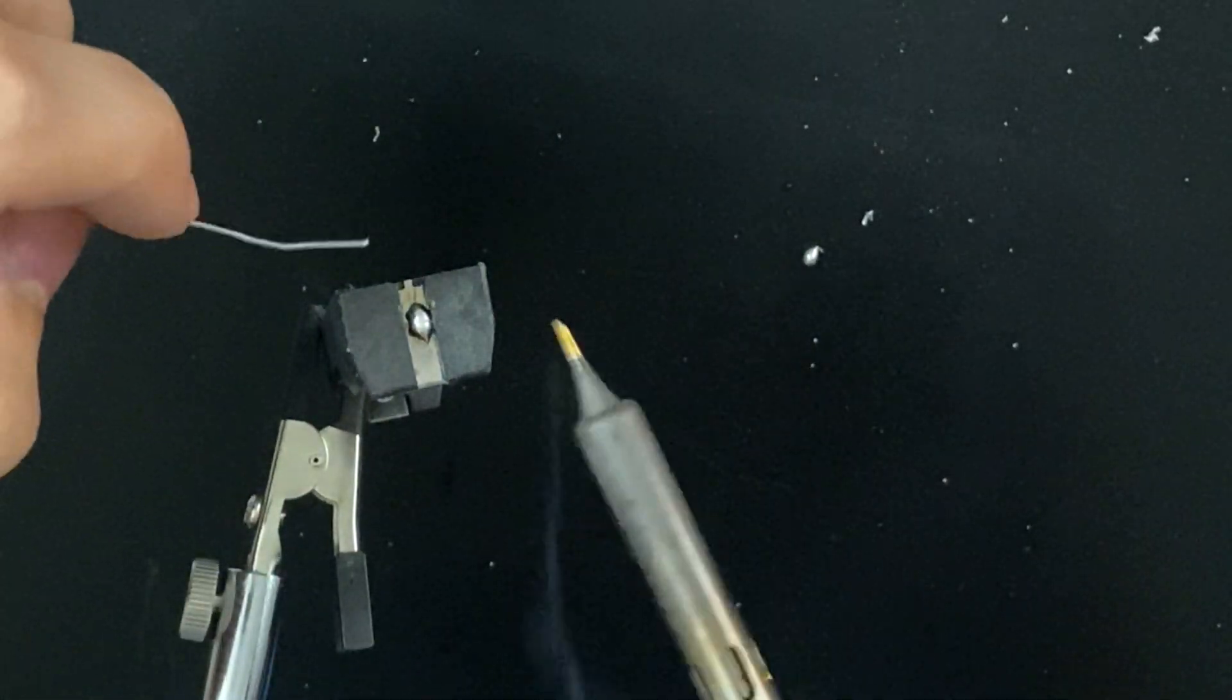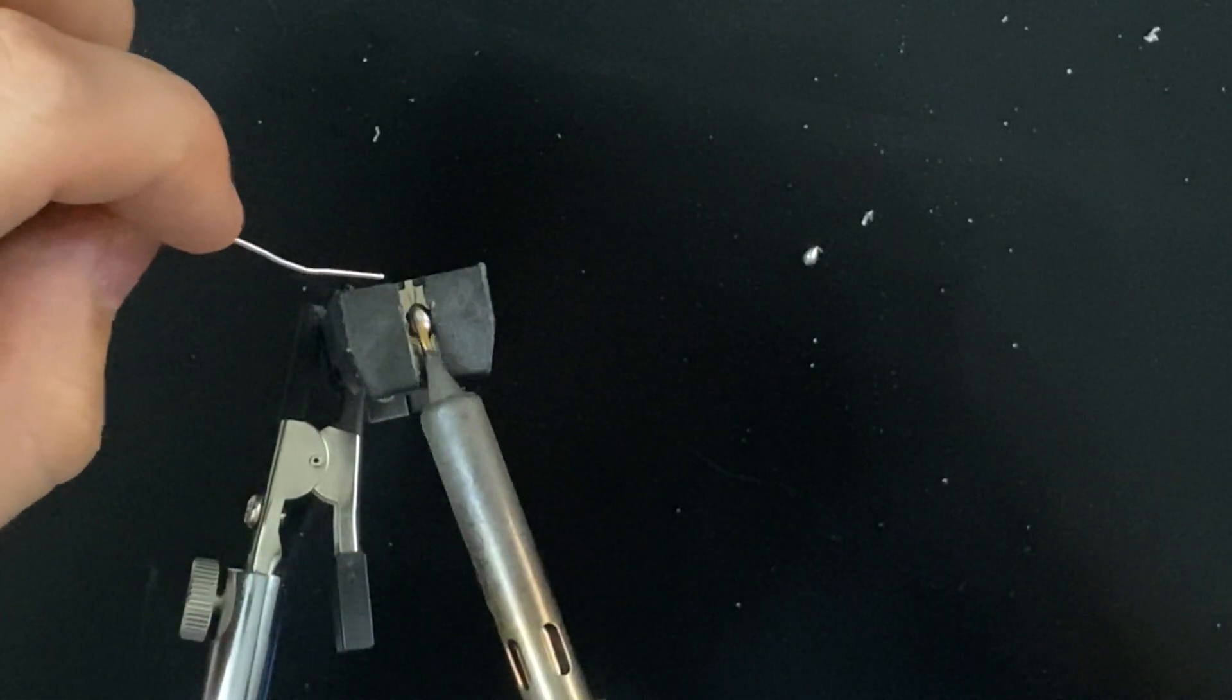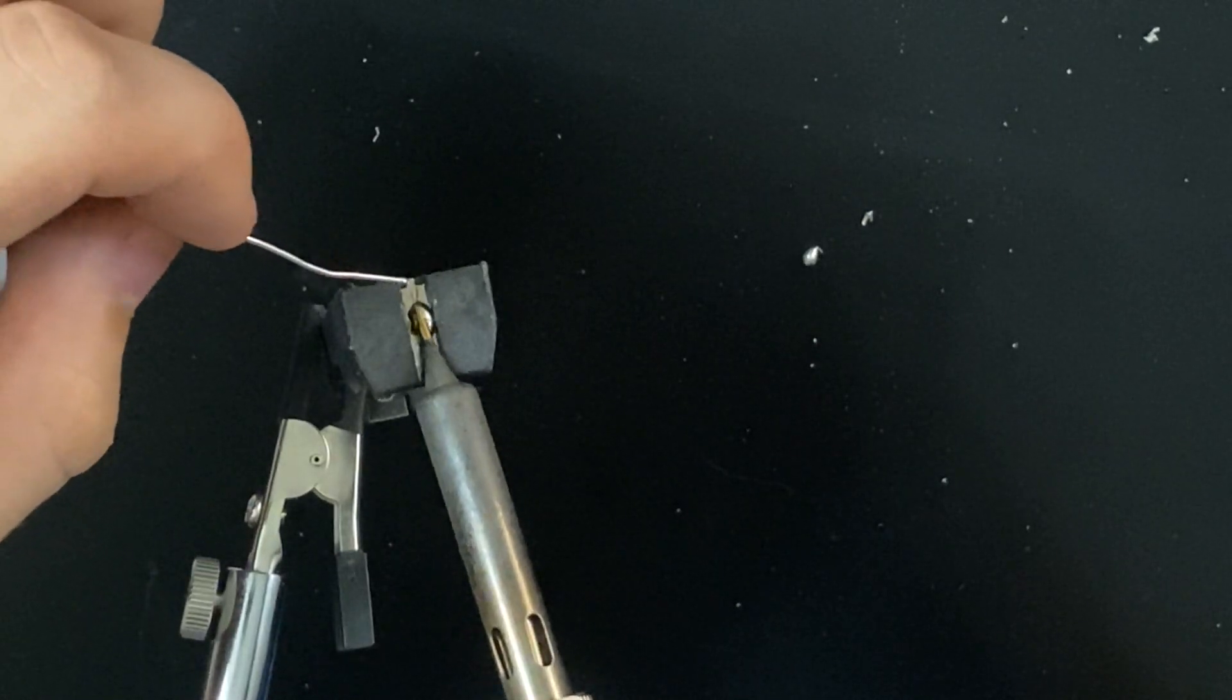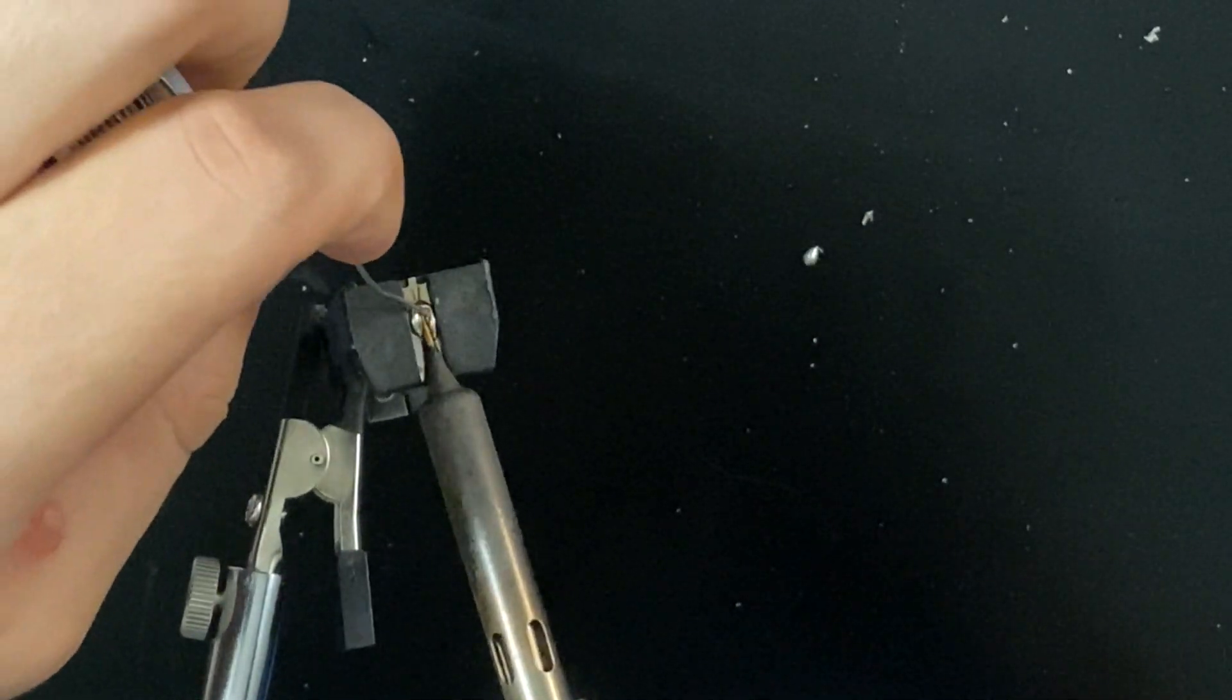So soldering to a battery holder. This one's already pre-tinned but I'm just going to show you again how to do it. So you would heat this up and then put in a little more solder. And then you got a pre-tinned battery tab.